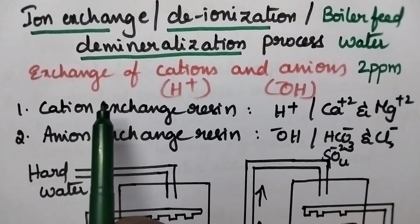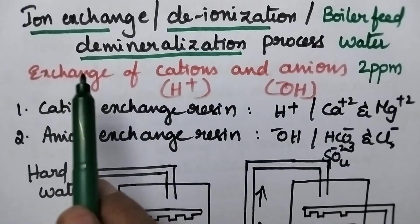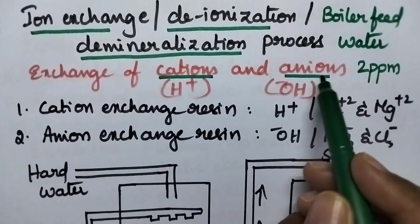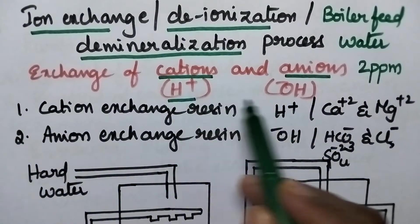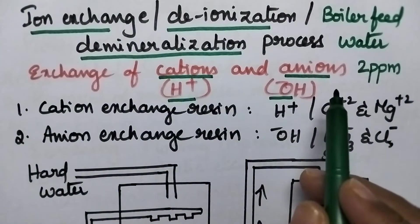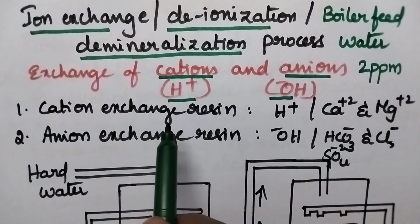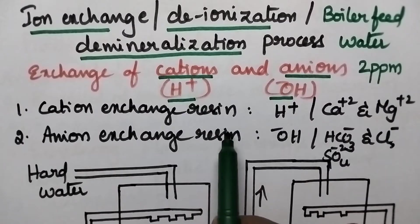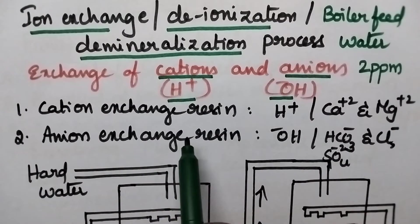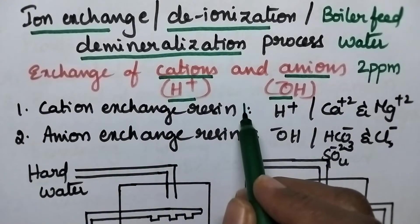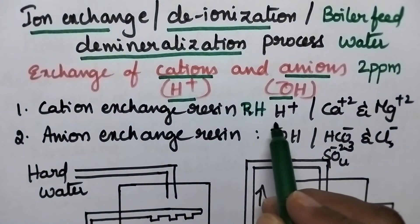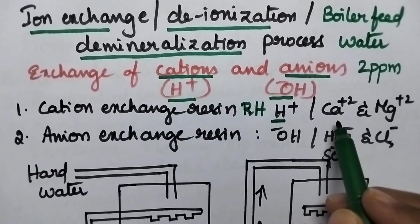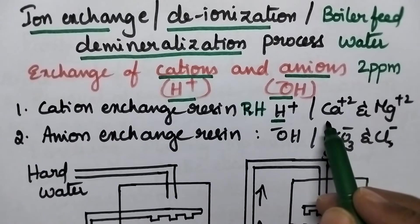In general, the ion exchange process involves the exchange of both the cations and the anions with H+ and OH- ions respectively. In this method, cation exchange resin and anion exchange resins are used. Cation exchange resin is generally represented by the formula RH, where the H+ ions can be easily replaced with hardness-producing cations such as calcium and magnesium.